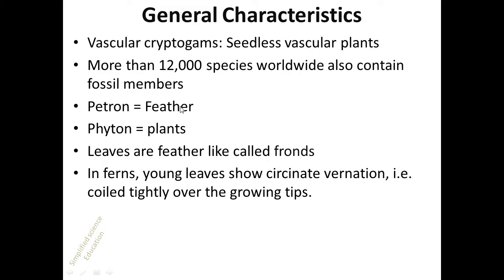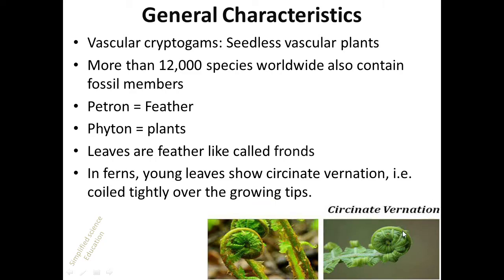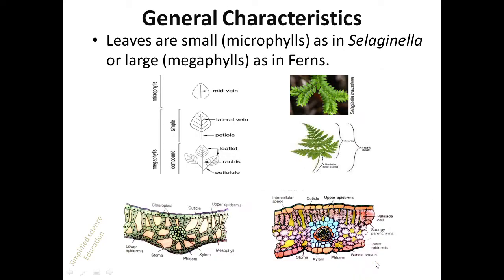The word pteridophyte is Greek in origin: 'pteron' means feather and 'phyton' means plant, so they are plants that have feather-like leaves. Young leaves show circinate venation, which is the venation in which the young leaf is tightly coiled over the growing tip.